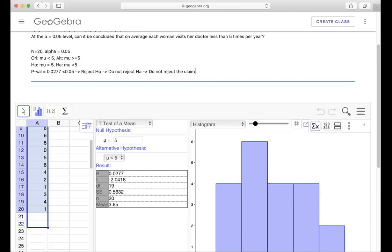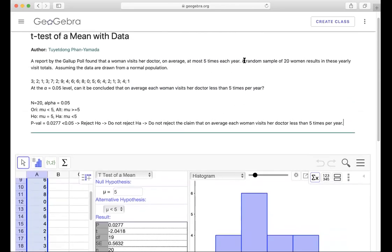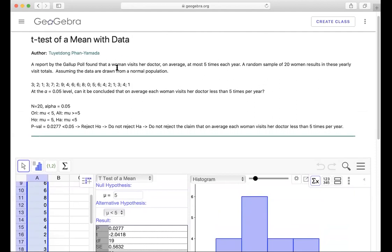We can say we do not reject the claim that on average a woman visits her doctor less than five times per year. That's what the Gallup says - on average at most five times per year. At most five times means could be no visit, one, two, three, four, but at most five. You can do any other problem using this app below to continue your work.